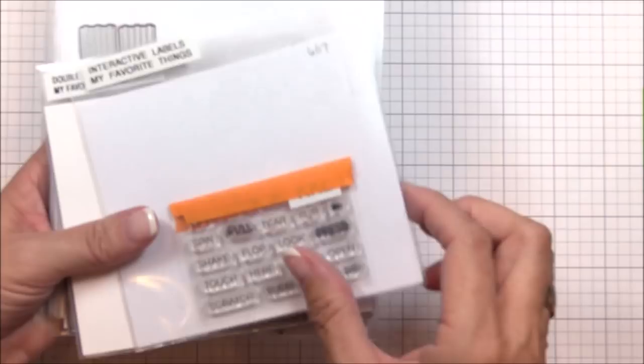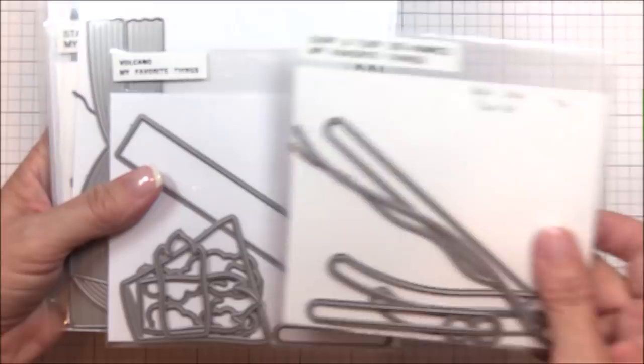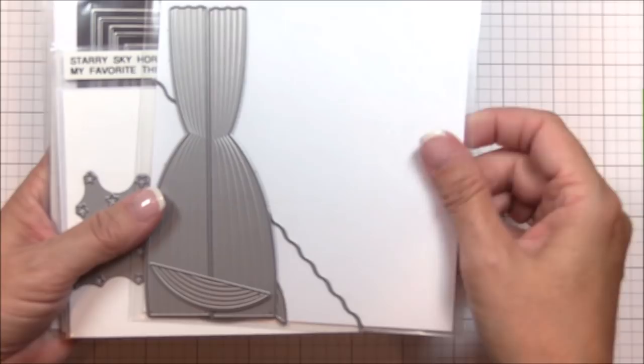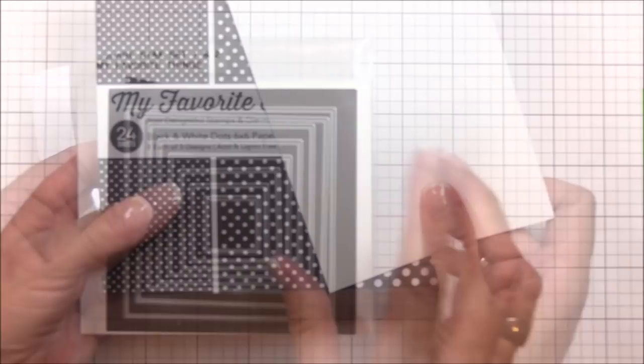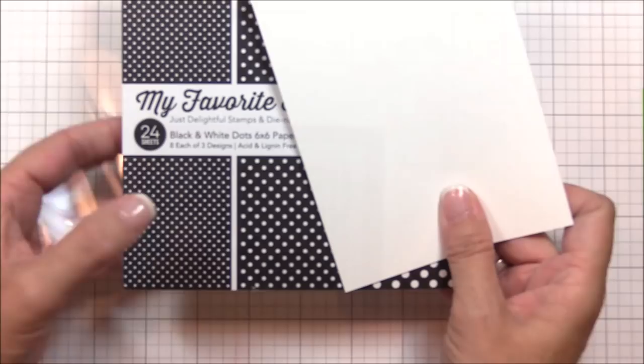To create my project, I'm using the Tutu Trio stamps and coordinating dies, the interactive label stamp set, the double slider loop slots dies, the longest channel die from the surf and turf dies, and the pull tab from the volcano dies. The scene for my critters was created using the take the stage dies, the starry sky horizontal die, the essential fishtail sentiment strips dies, the A2 rectangle stacks set two dies, and the square stacks set one dies.